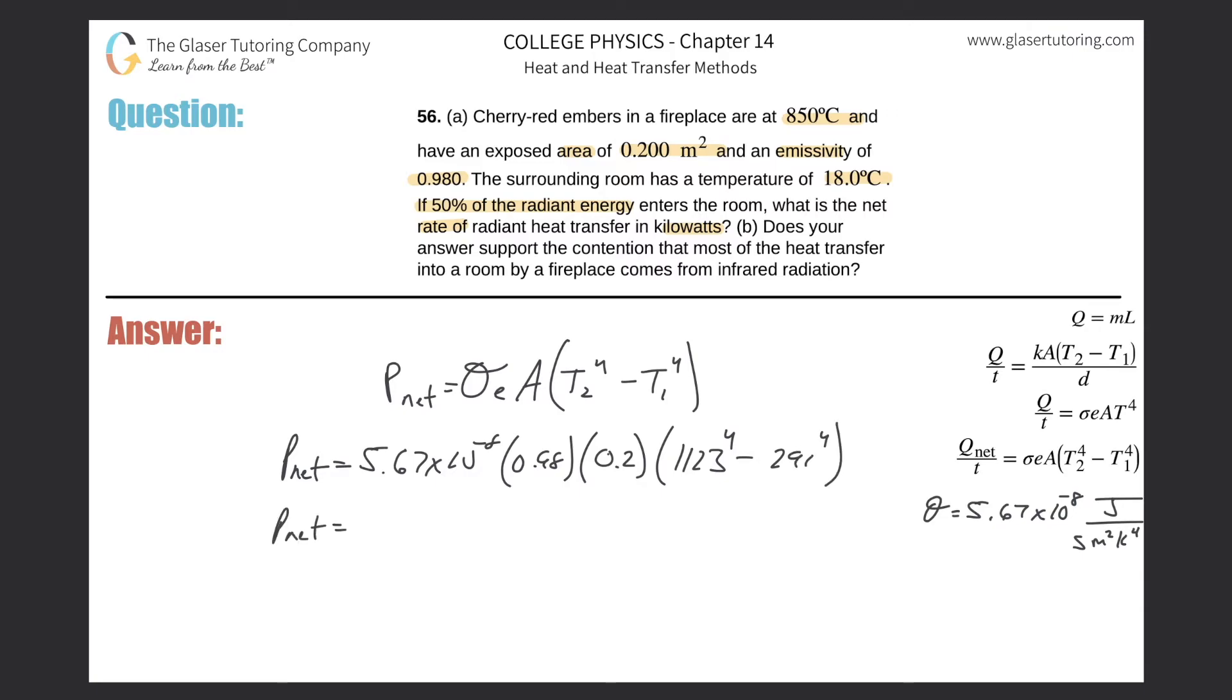And now all you got to do is simply just solve. So there's 5.67 times 10 to the negative eight, multiply by 0.98, multiply by 0.2, multiply by this difference. So 1123 raised to the fourth power minus 291 raised to the fourth. So this is going to be about 1.76 times 10 to the fourth watts. This is the total amount of energy that's being radiated, total.